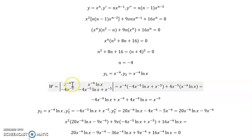Then we calculate our determinant. We multiply these two, and then we subtract the product of these two. And it simplifies so that the log terms cancel out, and we're left with x to the negative 9.